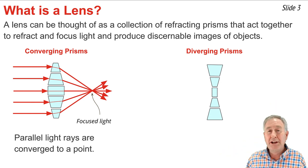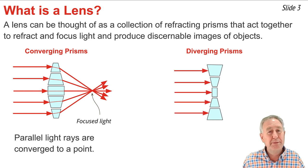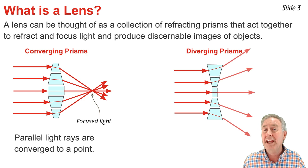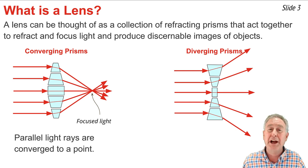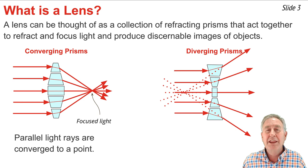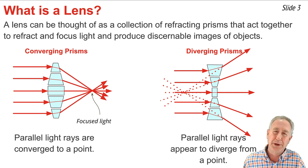Here on the right, we have a collection of prisms organized in such a way that they form the shape of a diverging lens. As parallel rays of light from a distant source approach this collection of prisms, each light ray will encounter a surface angled differently than for the converging lens. The result is that as light refracts upon entry and exit, the light rays are observed to be spreading apart or diverging. But if we traced a dashed extension line backwards in space for each refracted ray, we would observe that each dashed extension line focuses at a point. These are called diverging lenses because they cause parallel light rays to appear to diverge from a point in space.